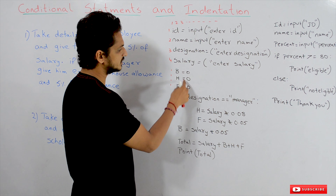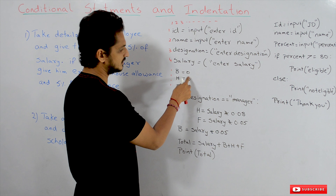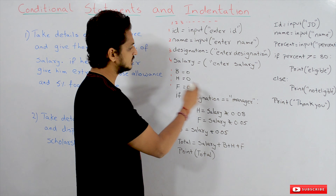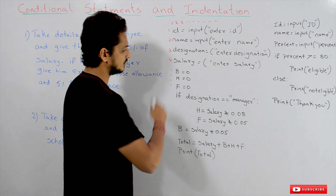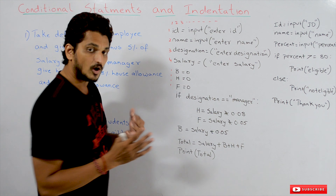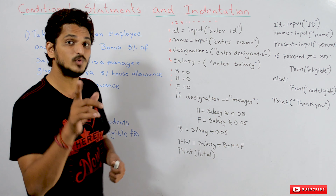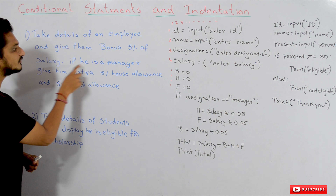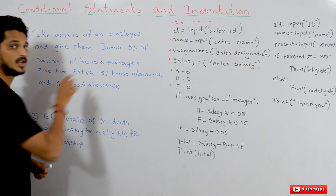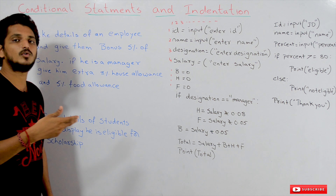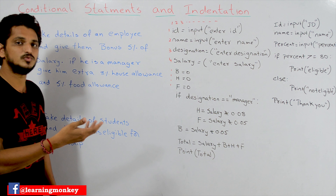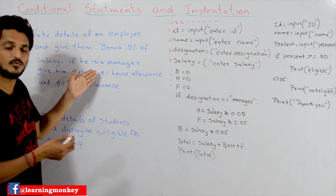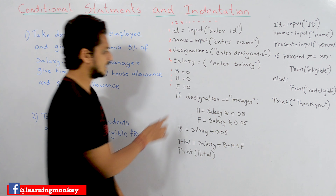Initially, bonus, house allowance, and food allowance values are all set to 0. Now coming to the conditional statement — here we have a condition: if he is a manager, how do we write the code in Python to apply this condition? We use conditional statements.